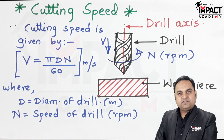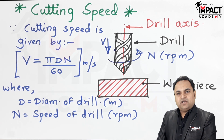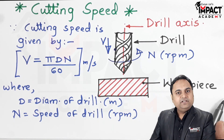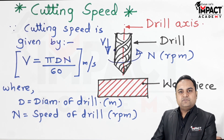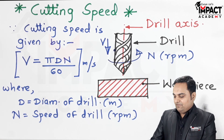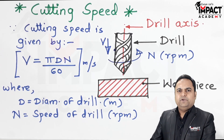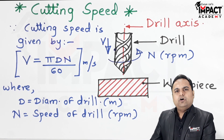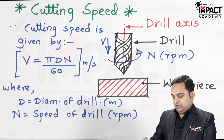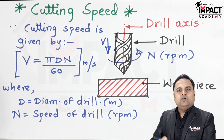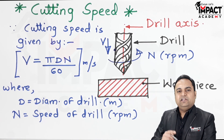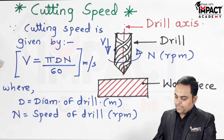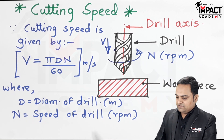At the same time, cutting speed also depends upon the type of material of the workpiece. For hard materials we have to keep the cutting speed slow, and for softer materials the cutting speed should be fast, because for soft materials the material from the workpiece would be removed really quickly. So we have to use fast speed in the case of softer workpieces.